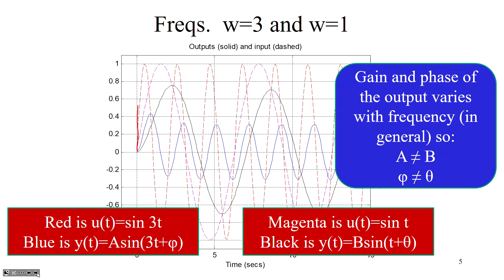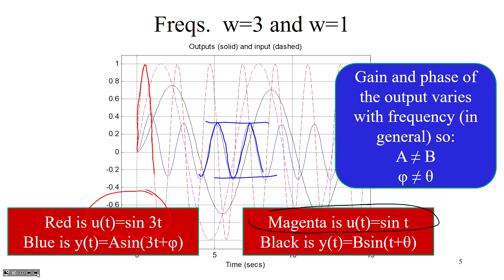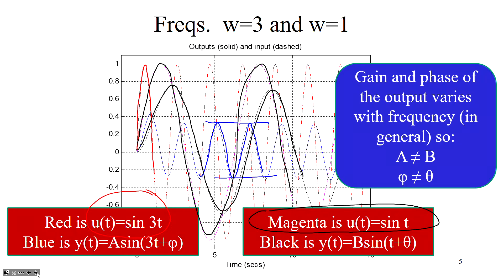What happens if we change the frequency? The red line is u(t) = sin(3t) with its corresponding blue output — they have the same frequency with a particular gain and phase. The magenta curve is sin(t), a much slower frequency sinusoid, and the corresponding output is in black. If you ignore transients, the amplitude is very different, so changing the frequency gives a different amplitude and also a different phase.